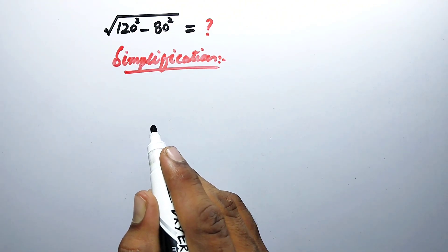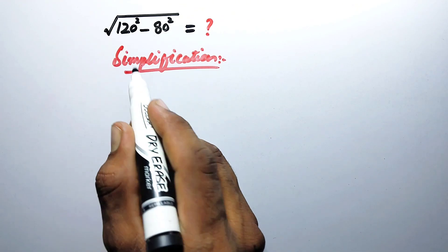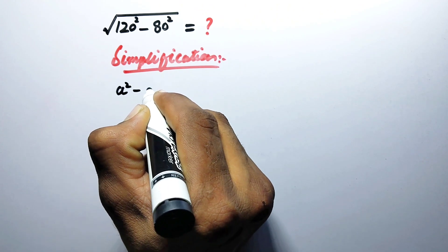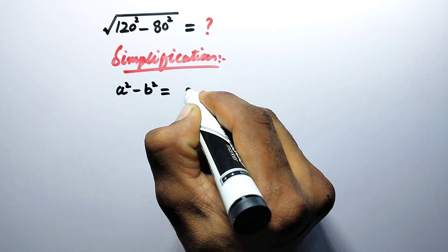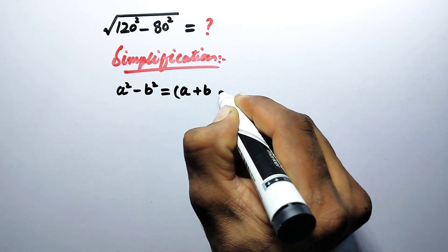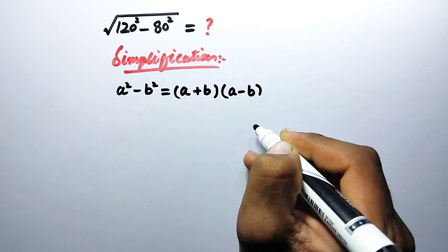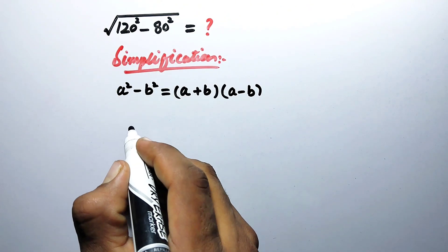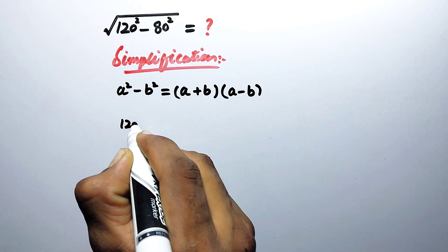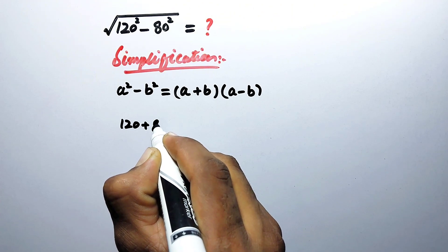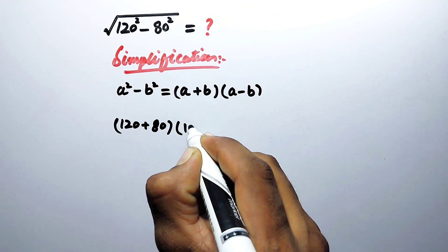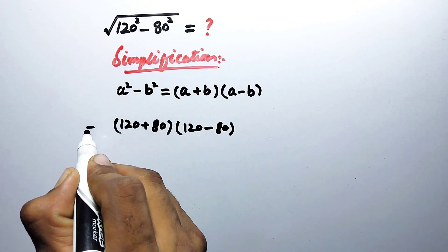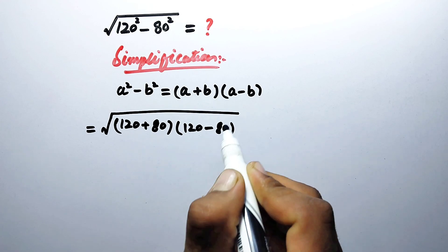So here in the first step, we can write this term by applying an algebraic formula. As we know, a squared minus b squared is equal to a plus b into a minus b. So according to this formula, we can write these terms under the root in this way: 120 plus 80 into 120 minus 80, and the whole term is under the root.